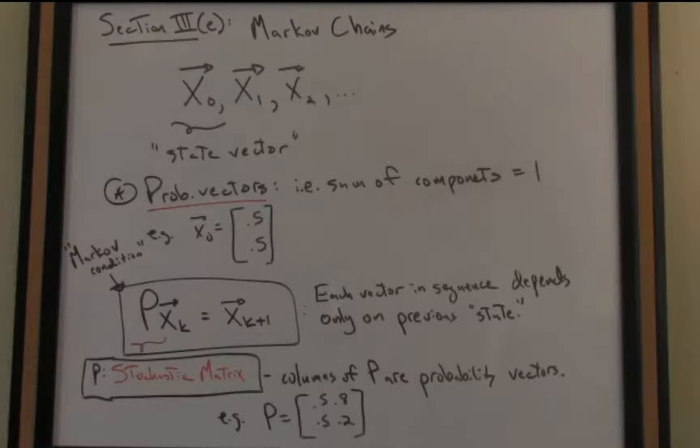And all that means is that the columns of the matrix P are probability vectors. In other words, the sum of the components for each of those columns equals 1, respectively. And here's a simple example of a stochastic matrix, and notice the sum of the components of column 1 is 1, and the sum of the components of column 2 is also equal to 1.